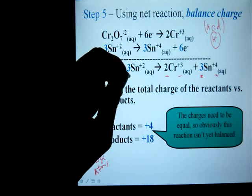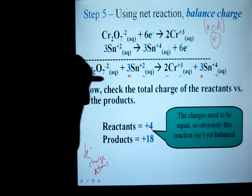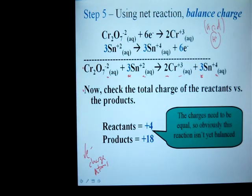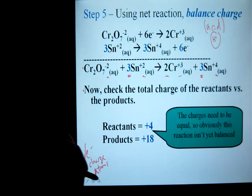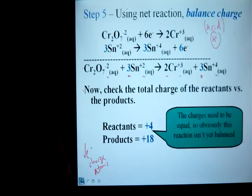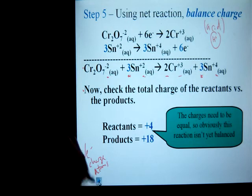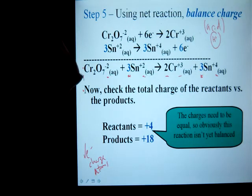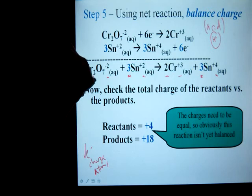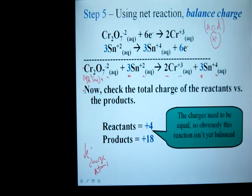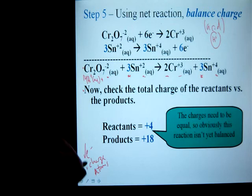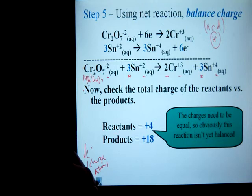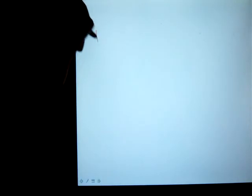Reactants, I have 3 times a plus 2 for 6, minus 2 is a total charge of plus 4. So now that doesn't balance out, obviously. So I'm going to use my H's and put them wherever I need. So I'm going to have to add 14 H's over here. And now my charge is balanced. So I'm going to write that on the next slide.